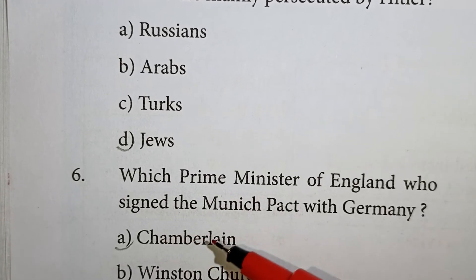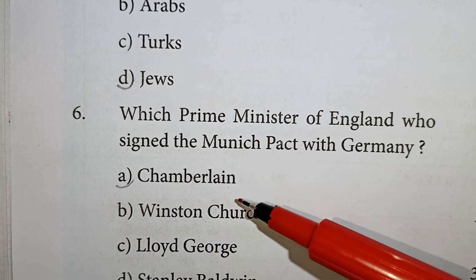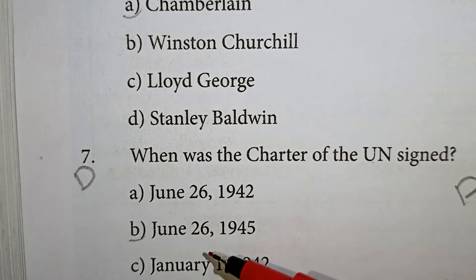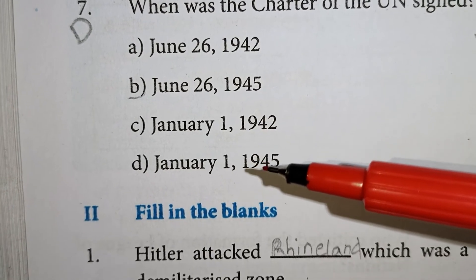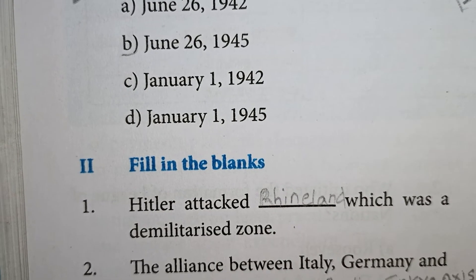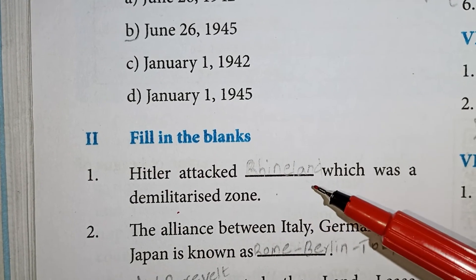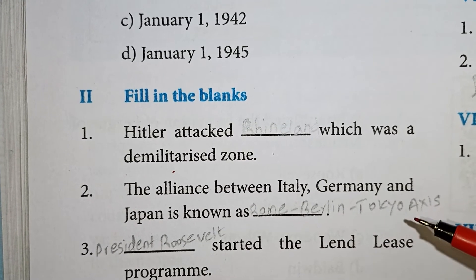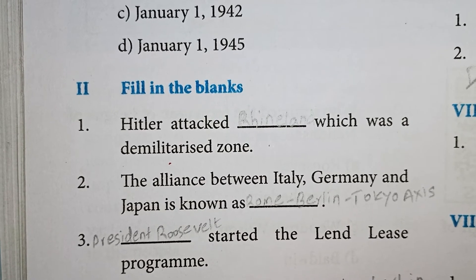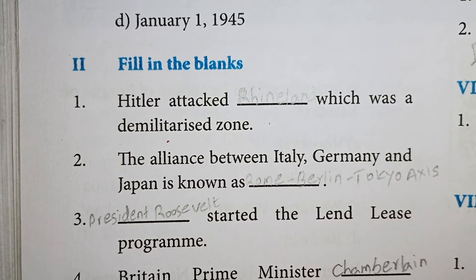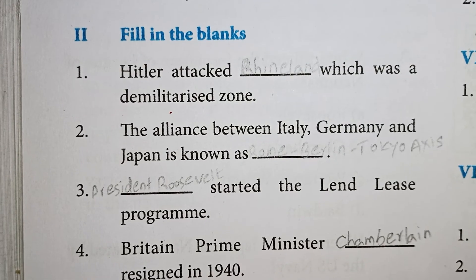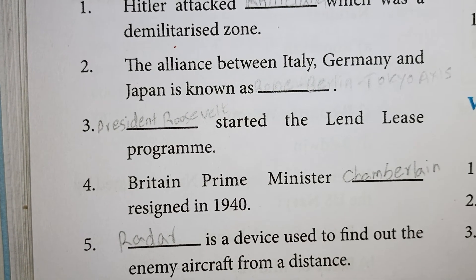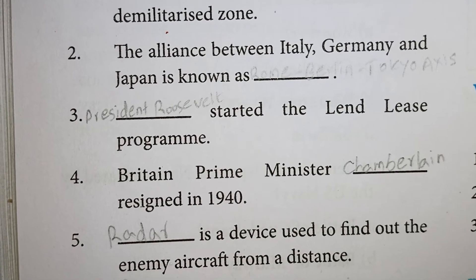Which Prime Minister of England signed the Munich Pact with Germany? Chamberlain. When was the charter of the UN signed? June 26, 1945. Hitler attacked the Rhineland, which was a demilitarized zone. The alliance between Italy, Germany, and Japan is known as the Rome-Berlin-Tokyo Axis. The Lend-Lease Program was started by President Roosevelt. The British Prime Minister who signed the Munich Pact in 1940 was Chamberlain.